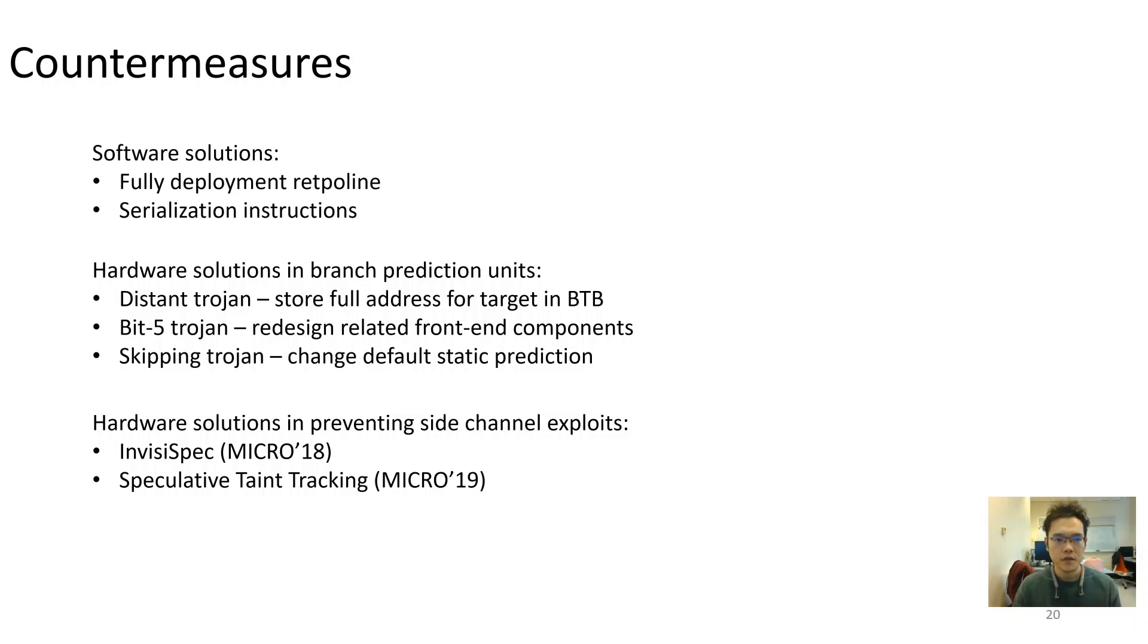We also listed hardware fixes to tackle each trojan. For example, future branch predictors could store full addresses of the target in BTB to prevent distant trojan and collision. Redesigning of the related front-end components could avoid bit 5 type of branch collision anomalies. Changing the default indirect branch static predictions could address branch skipping.